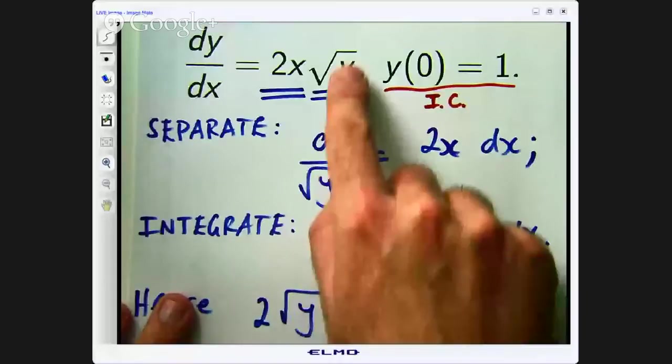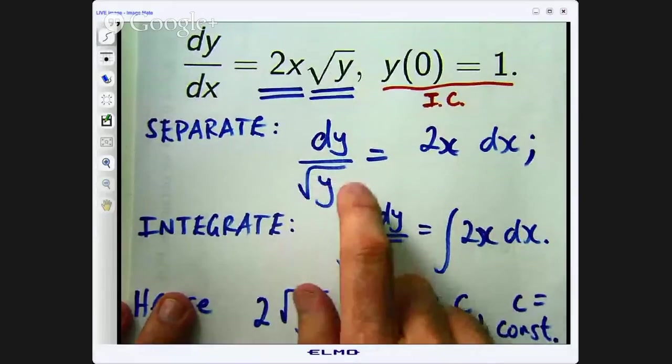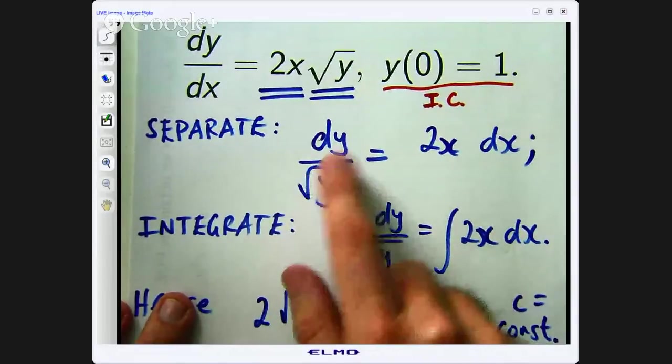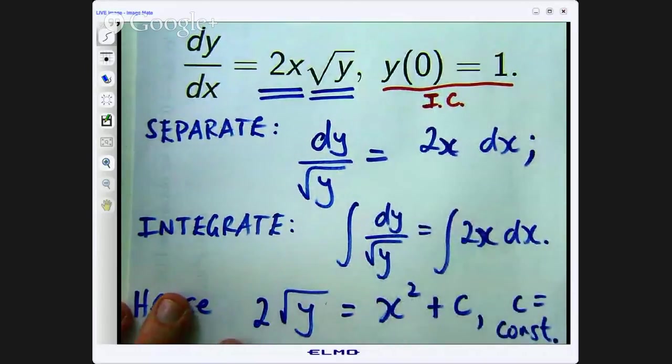Alright, so I hope you enjoyed that presentation. Oh, just one more thing before I go. You know, when we are dividing here, we are obviously assuming that the zero function is not a solution. And we can check that just by ruling out the zero function from this initial condition. Just a little bit of housekeeping.